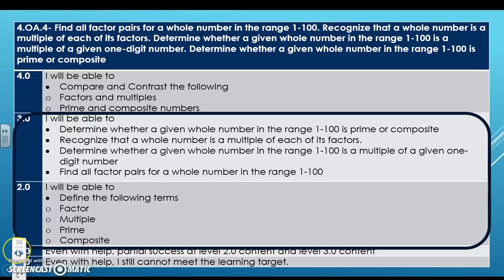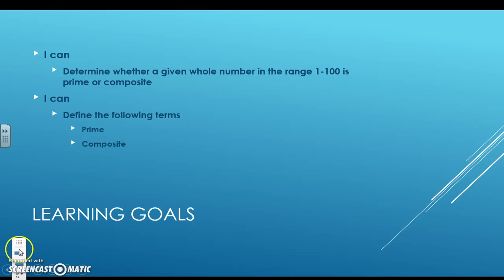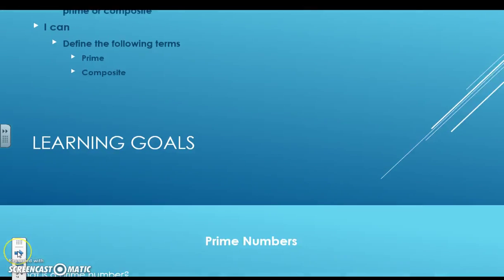Today's lesson is on prime and composite numbers. Your learning goals on the board, we're only going to be focusing on the prime and composite sections of this learning scale. So your learning goals are: I can determine whether a given whole number in the range 1 to 100 is prime or composite, and I can define the terms prime and composite.